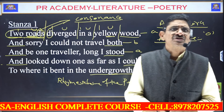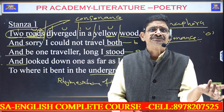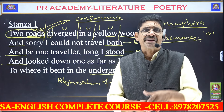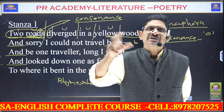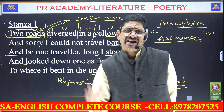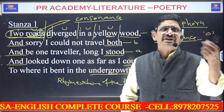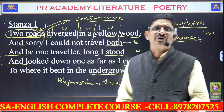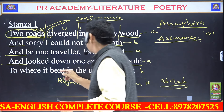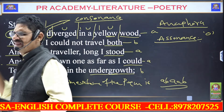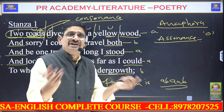To summarize: the two roads are compared with the choices of life — this is a metaphor. The undergrowth in the poem indicates the future life. These are the key literary devices found in the first stanza of the poem.